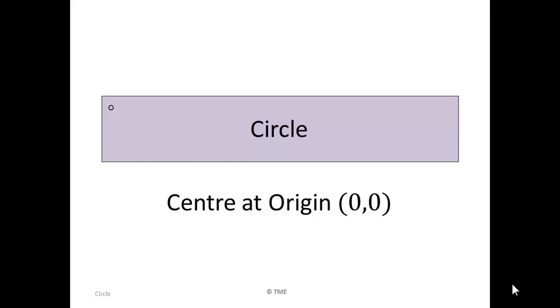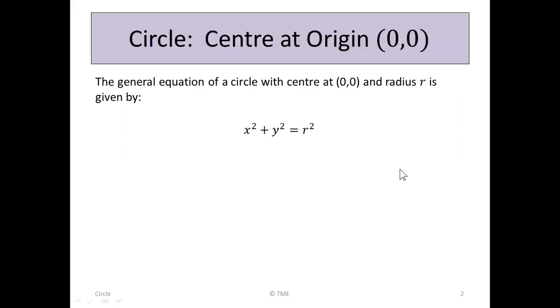Circle: Centre at origin (0,0). The general equation of a circle with centre at (0,0) and radius r is given by x squared plus y squared equals r squared. This formula is given in the tables.